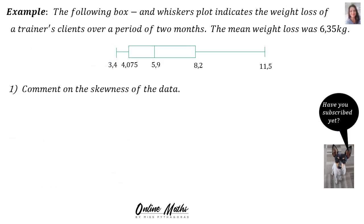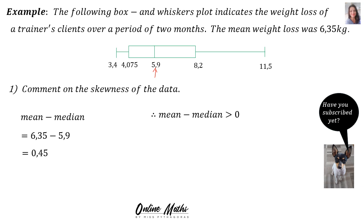Let's do another example. The following box and whiskers plot shows the weight loss of a trainer's clients over two months. The mean weight loss was 6.35 kg. Question 1: comment on the skewness of the data. We calculate: mean minus median = 6.35 − 5.9 = 0.45, which is positive. Therefore the mean minus median is greater than 0, so the data is positively skewed to the right.